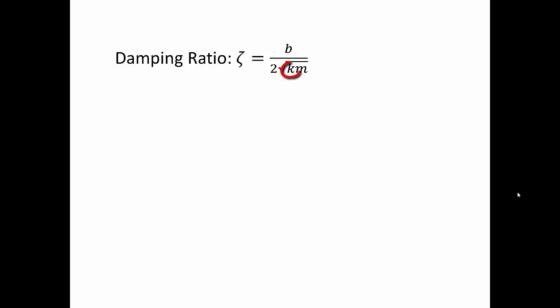The mass, the spring constant, and the damping coefficient. And we define, when ζ is smaller than 1, the system is underdamped. When ζ is greater than 1, the system is overdamped.